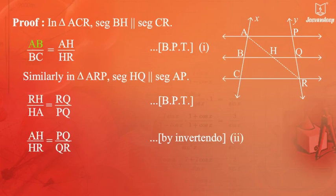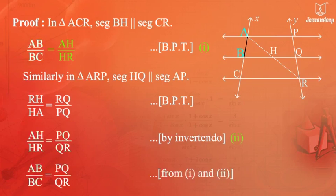As AB upon BC equals AH upon HR by Equation 1, and AH upon HR equals PQ upon QR by Equation 2, we get AB upon BC equals PQ upon QR. (Equation 3)